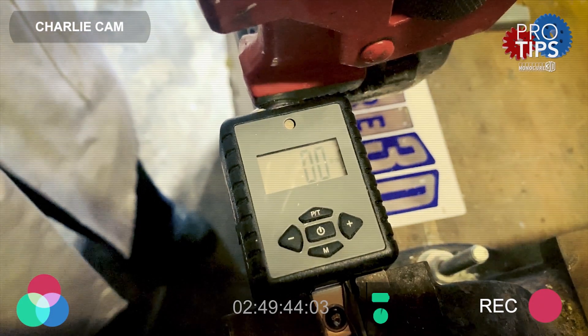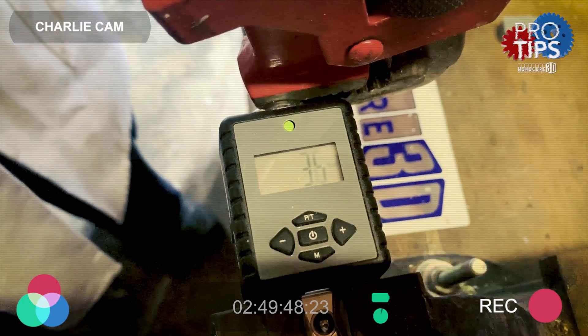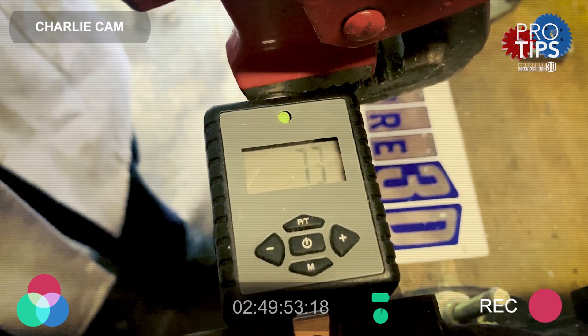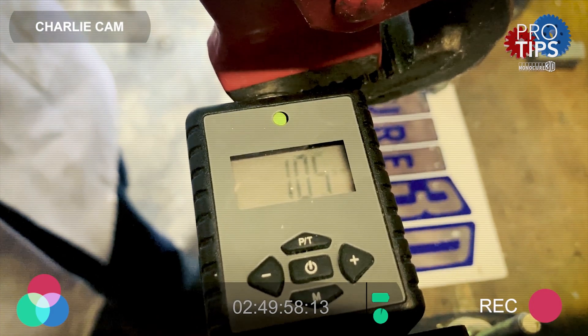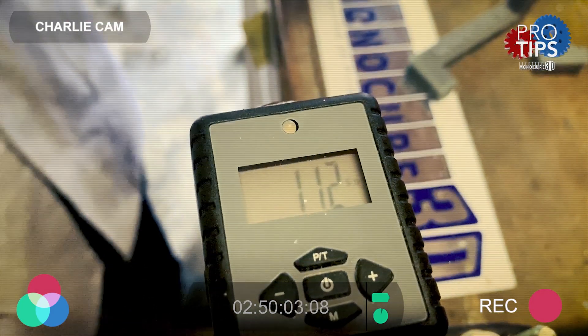And wrench two is rapid resin with 25% Flex 100 added. As you can see by these numbers on the torque meter, by adding the Flex 100, it increases the breaking point quite considerably.